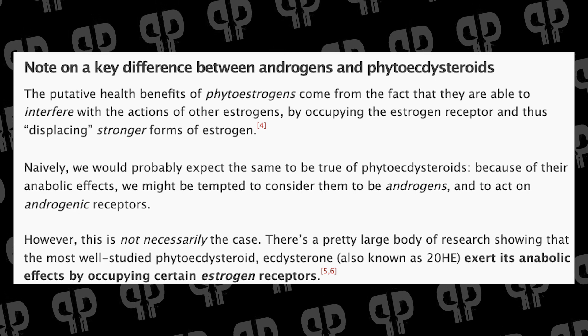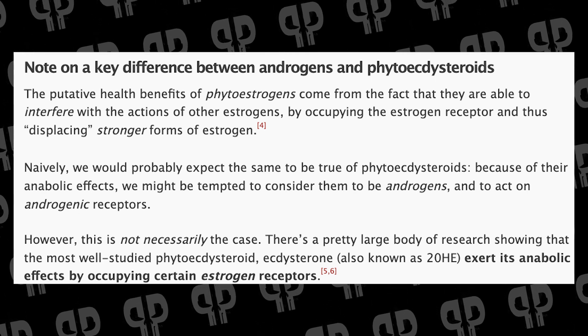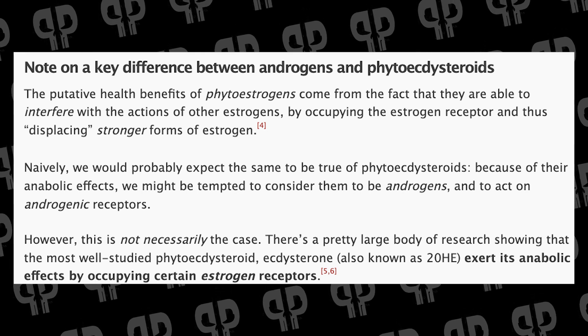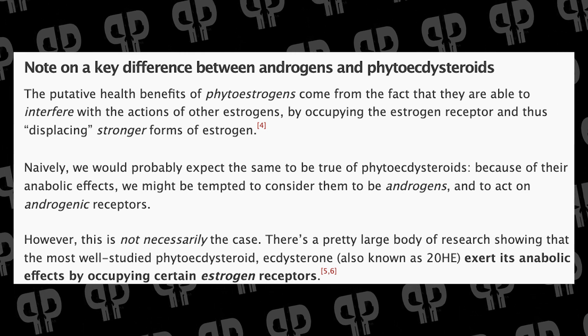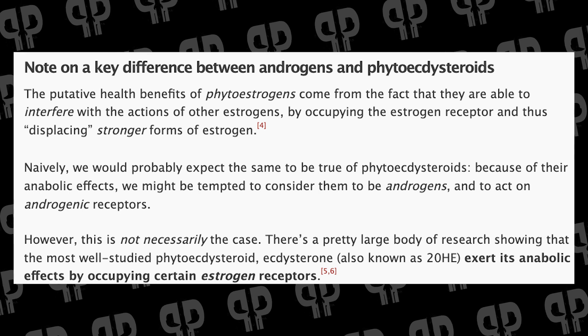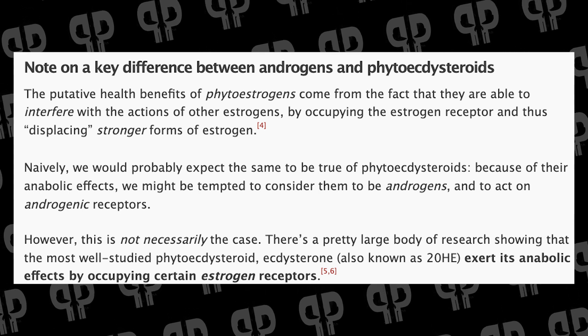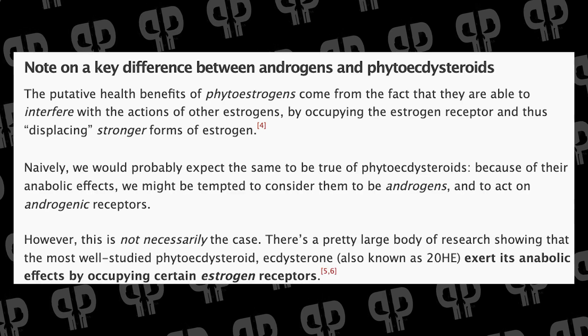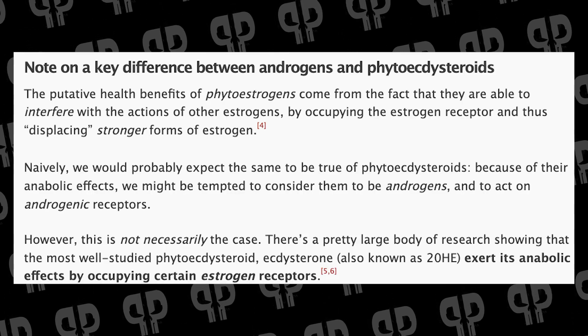The putative health effects from phytoestrogens come from the fact that they are able to interfere with the actions of other estrogens by occupying the receptor and displacing stronger forms of estrogen. Naively, we might expect the same for phytoectosteroids — tempted to consider them androgens acting on androgenic receptors. That would be a problem, because displacing androgens creates a dependency, which is where a lot of shutdown effects happen. That's why many people end up on TRT after using SARMs, pro-hormones, or other compounds that mess with androgen activity.